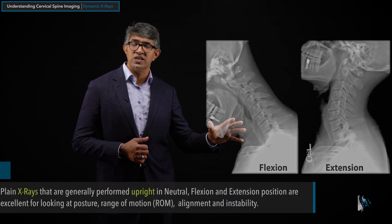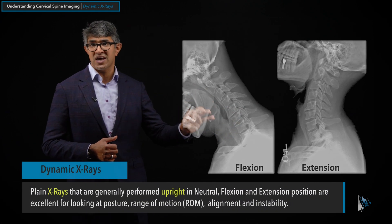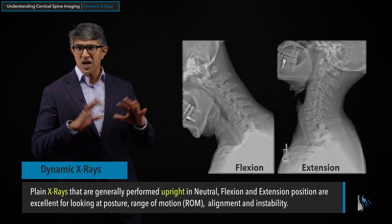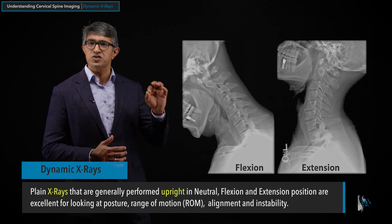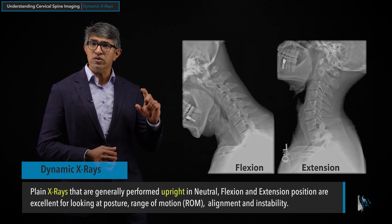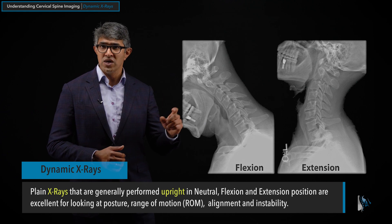So what do you miss in that? You miss how your spine reacts to normal load. When you're standing up, leaning forward and leaning back, you can't see any of that in an MRI or a CAT scan. That's really the role of dynamic x-rays. This is a very valuable study — not sufficient alone, but it gives us an important piece of information: how your spine reacts to load.